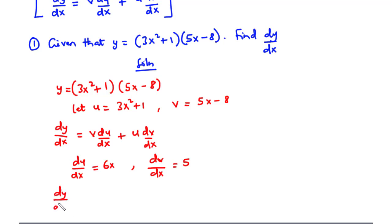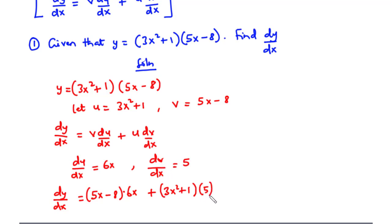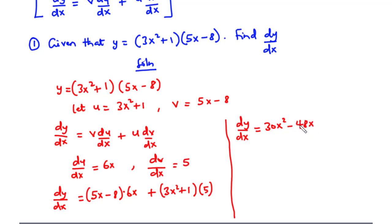Back to the formula: dy/dx equals v times du/dx plus u times dv/dx. Substituting, we have (5x - 8) times 6x plus (3x² + 1) times 5. Expanding: 5x times 6x is 30x², negative 8 times 6x is -48x, 3x² times 5 is 15x², and 1 times 5 is 5.